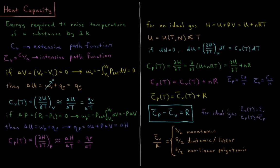For an ideal gas, the constant volume heat capacity divided by R equals 3/2 if the molecule is monatomic, 5/2 if it is diatomic or linear, and 6/2 (or 3) if it is a non-linear polyatomic molecule. So the constant volume heat capacities are 3/2 R, 5/2 R, and 3R respectively.